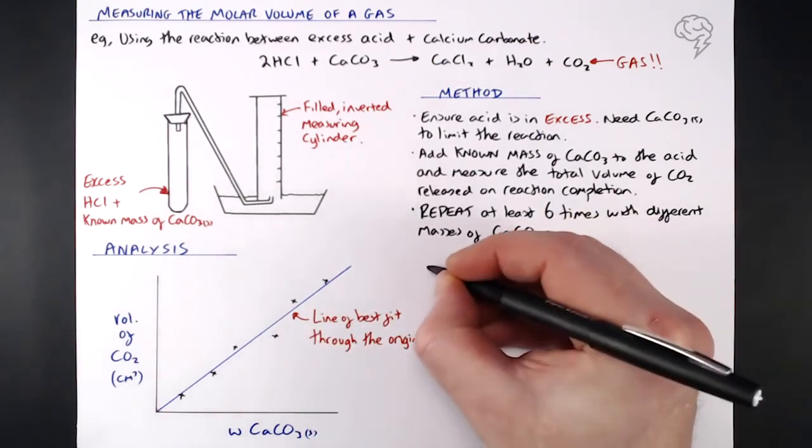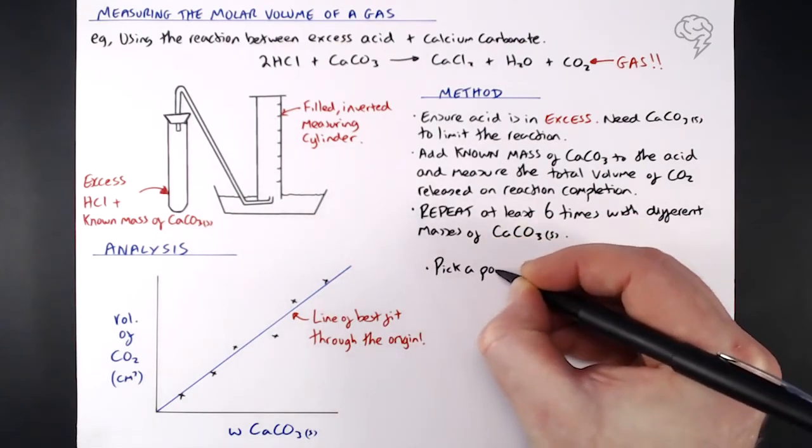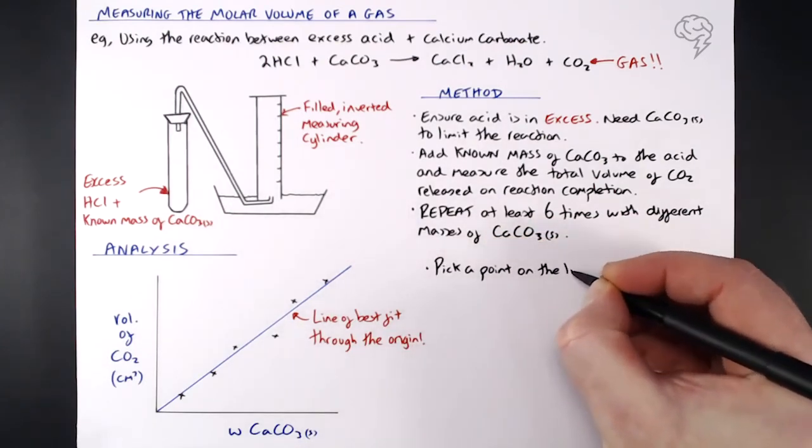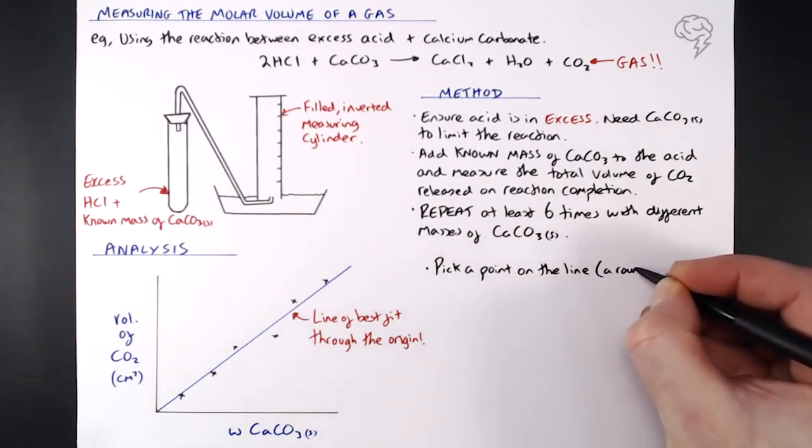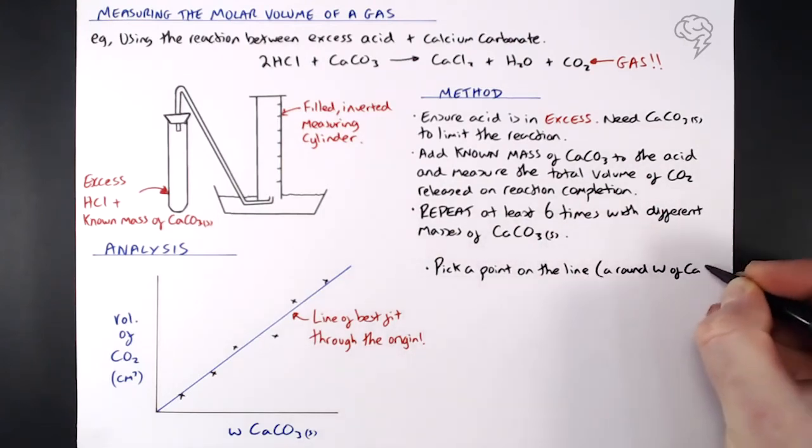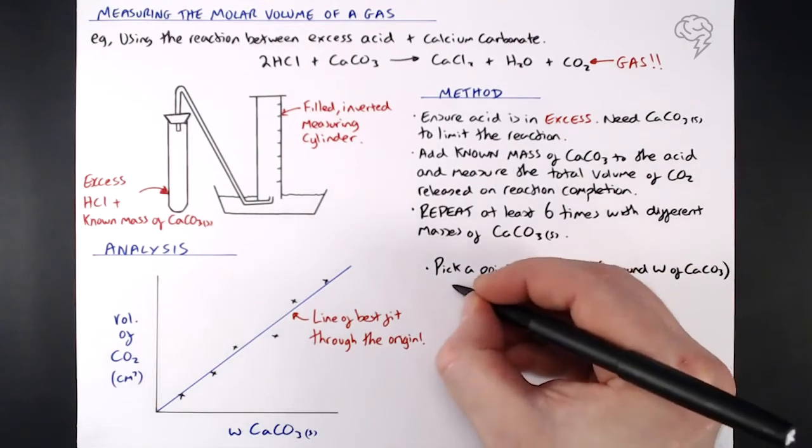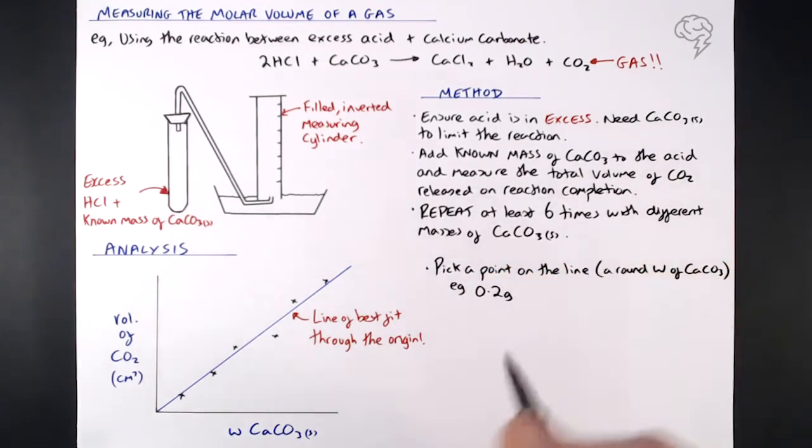So how do we go about the calculation? Well, first thing we do is we just pick a point on the line. I would suggest just finding a round mass of calcium carbonate. Don't pick a completely random number, pick something that's nice and rounded. Maybe something like 0.2 grams. It depends on what masses you are using, but just find a nice number to work with.